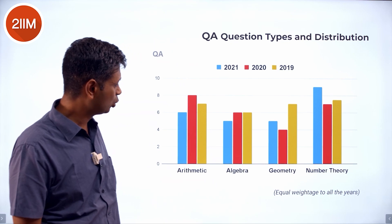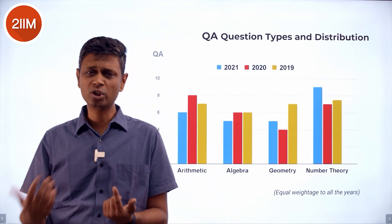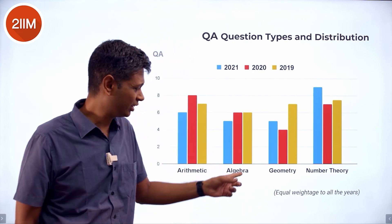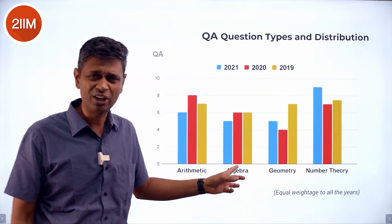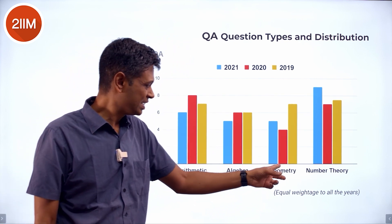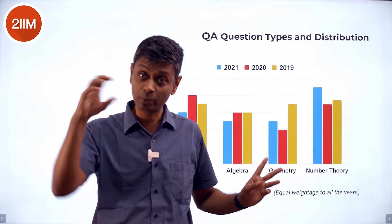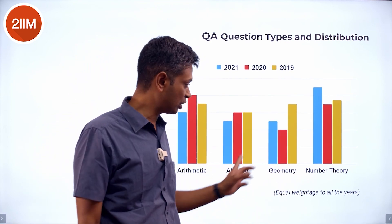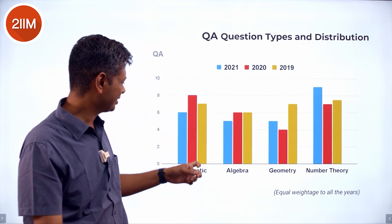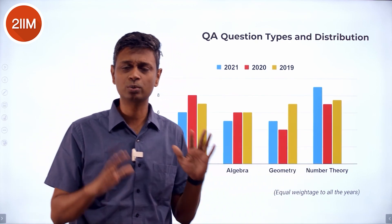The big two approachable topics are Arithmetic and Number Theory — those are more accessible. Generally the tougher topics sit in Algebra and Geometry: functions, exponents, polynomials, and coordinate geometry, which gets tricky and produces harder questions. The simple approach is to get Arithmetic and Number Theory firmly in the bag first, then think about the other two.